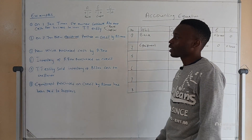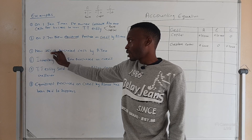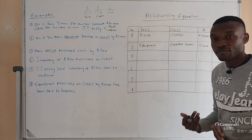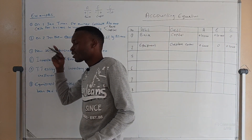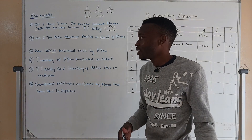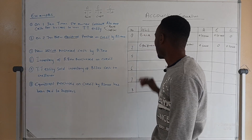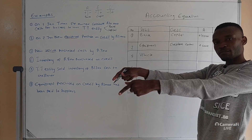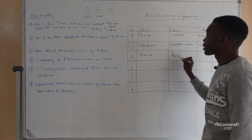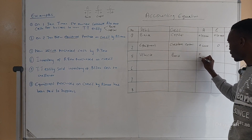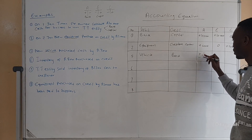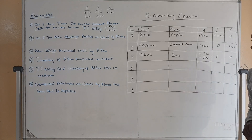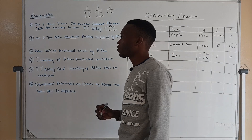Transaction number three: a new vehicle is purchased for cash at seven hundred. Vehicle is an asset and cash — bank — is also an asset. So the only column affected is assets, because both bank and vehicle are assets. Vehicle comes inside the business because we purchased it, so vehicle increases on the debit side. Bank decreases because we took money and paid for the vehicle — assets decrease on the credit side. So we record plus seven hundred and minus seven hundred, and the other two columns are not affected.